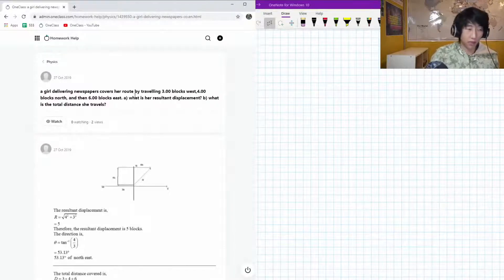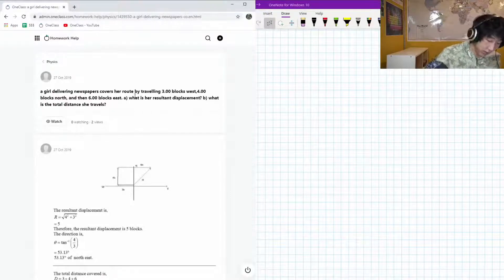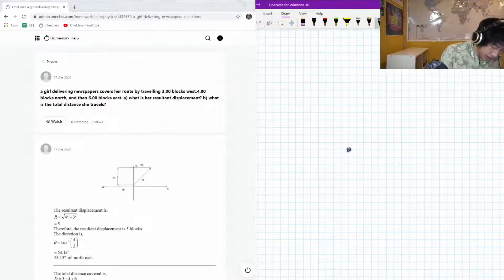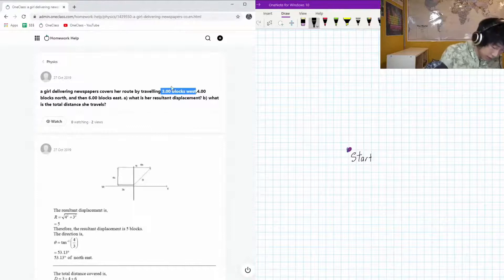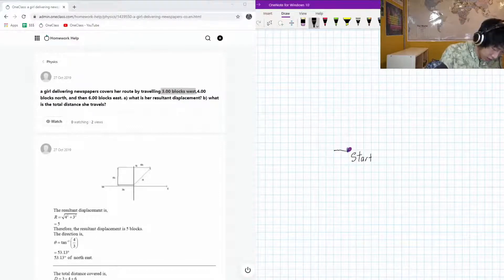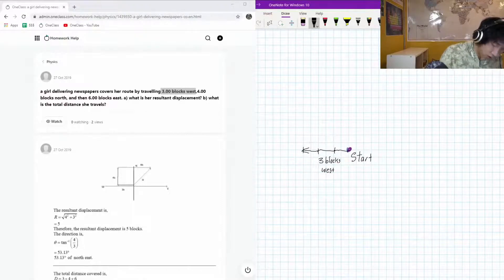Okay, so let's actually draw a diagram of this path that our newspaper deliverer is following. Let's call this our start point right here. The first step in our journey is three blocks to the west. So west is towards the left, that's one block, two blocks, three blocks, arrow going this way.